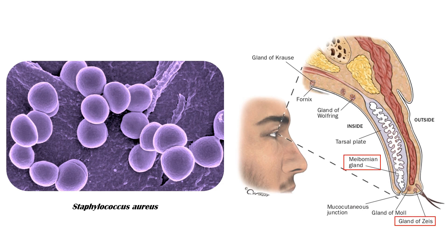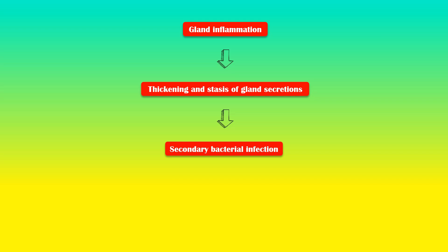Inflammation in these glands leads to thickening and stasis of gland secretions, which facilitates secondary bacterial infection, usually by Staphylococcus aureus.